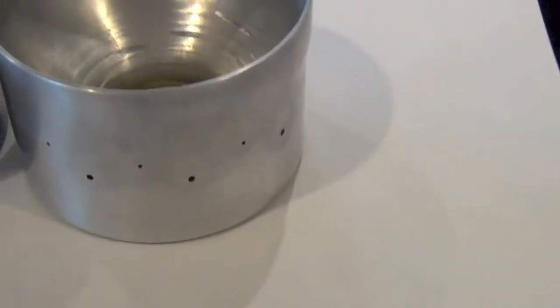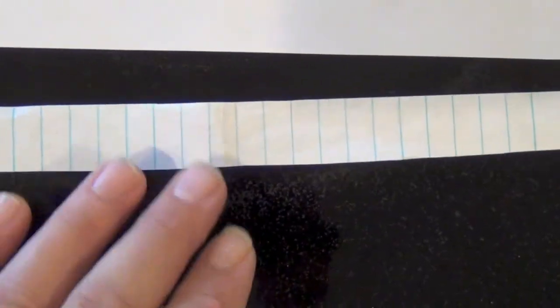And to get the spacing on the holes, I just took a piece of college rule notebook paper, cut the edge off, taped it around, and used these lines as a guide. All the holes are spaced three apart. So three apart for the top row, three apart for the bottom row.